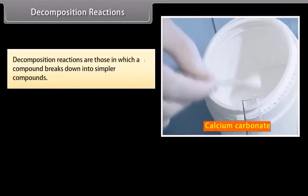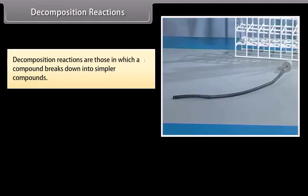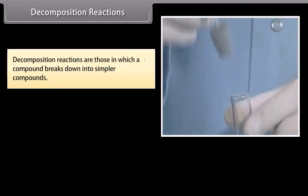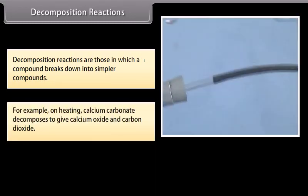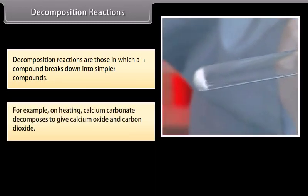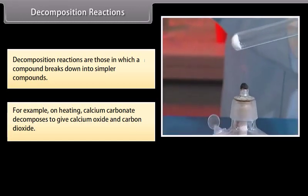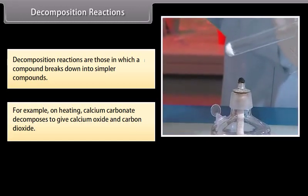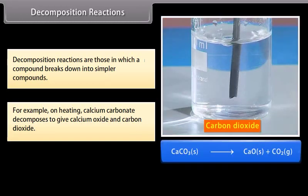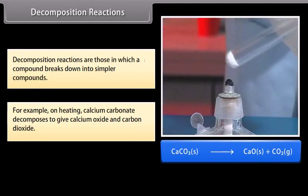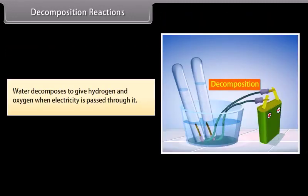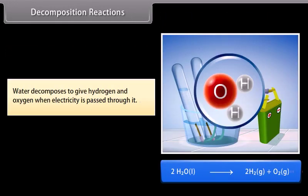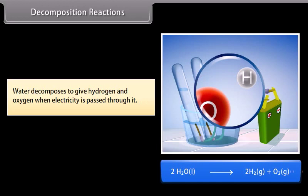Decomposition reactions. Decomposition reactions are those in which a compound breaks down into simpler compounds. For example, on heating, calcium carbonate decomposes to give calcium oxide and carbon dioxide: CaCO₃ → CaO + CO₂. Water decomposes to give hydrogen and oxygen when electricity is passed through it.